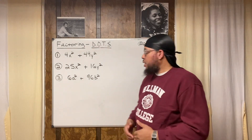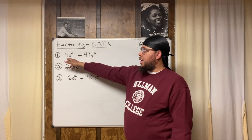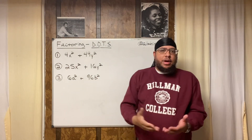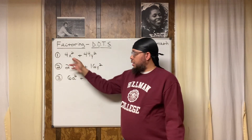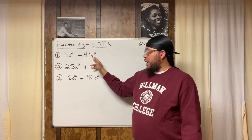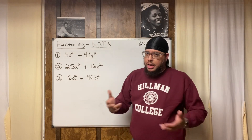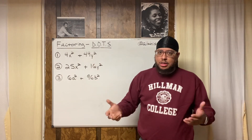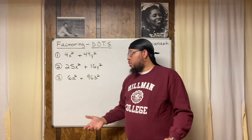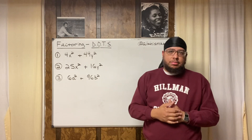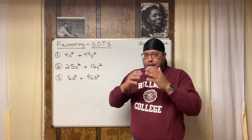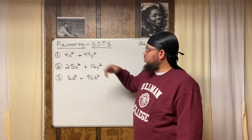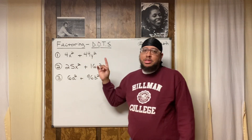So if I look at number one and look at the coefficients — the four and the 49 — they don't have a common factor except one. This term has an x-squared, this term has a y-squared, so neither of those are common because they're not in both terms. So there's no GCF in number one except for one, which doesn't help us.